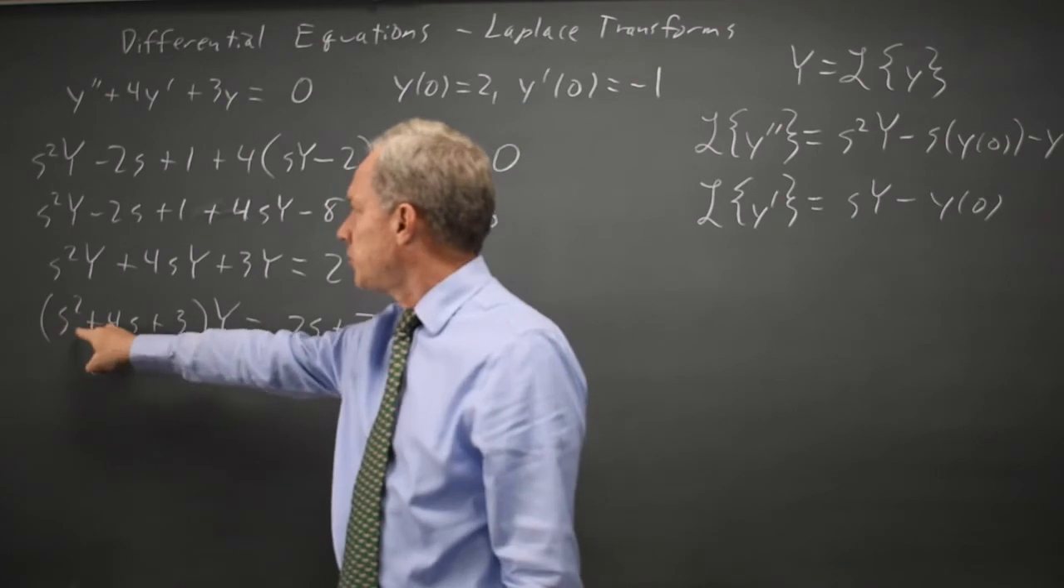And I notice that this polynomial here matches the characteristic polynomial that I would get if I was using the assumed solution of y equals e to the rt. But that's a different method. Solving for uppercase Y, the transform of the solution, I get Y equals 2s plus 7 over s squared plus 4s plus 3.